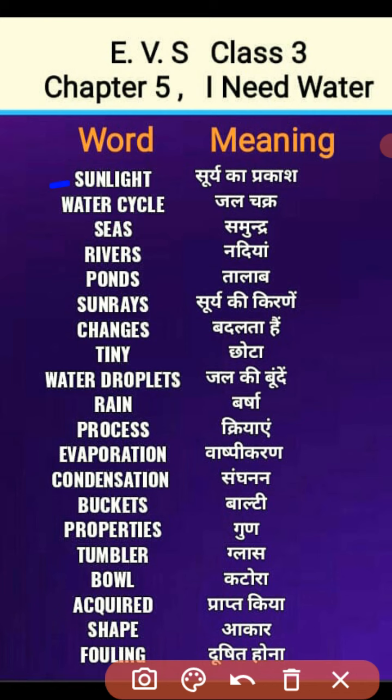Sunlight matlab soori ka prakaash. Water cycle matlab jal chakra. Seas matlab samundar — bahut saare samundar ko kahenge seas. Rivers matlab nadiyan. Pond matlab ek talab. Ponds matlab ek se zyada talab.